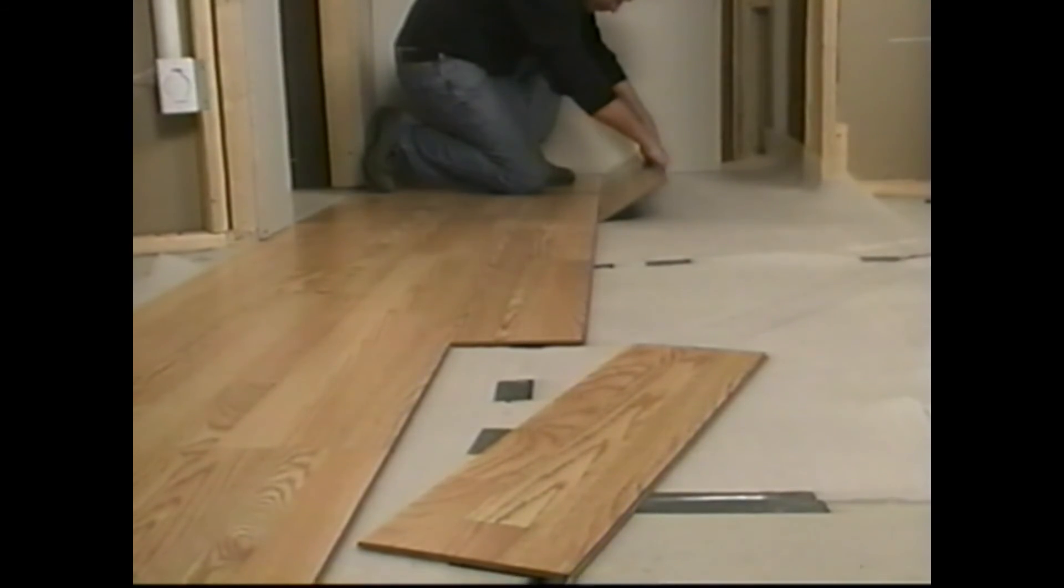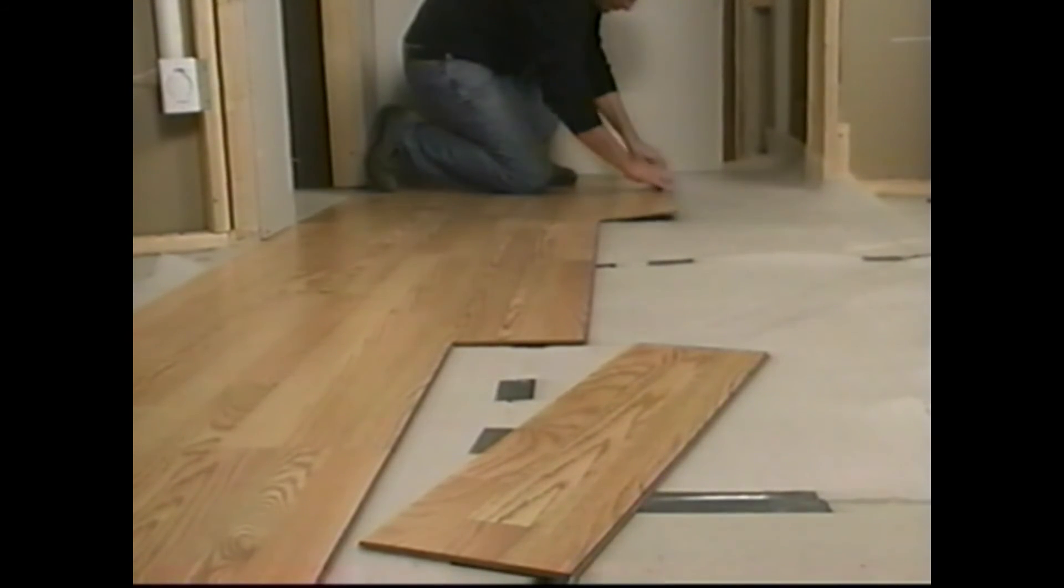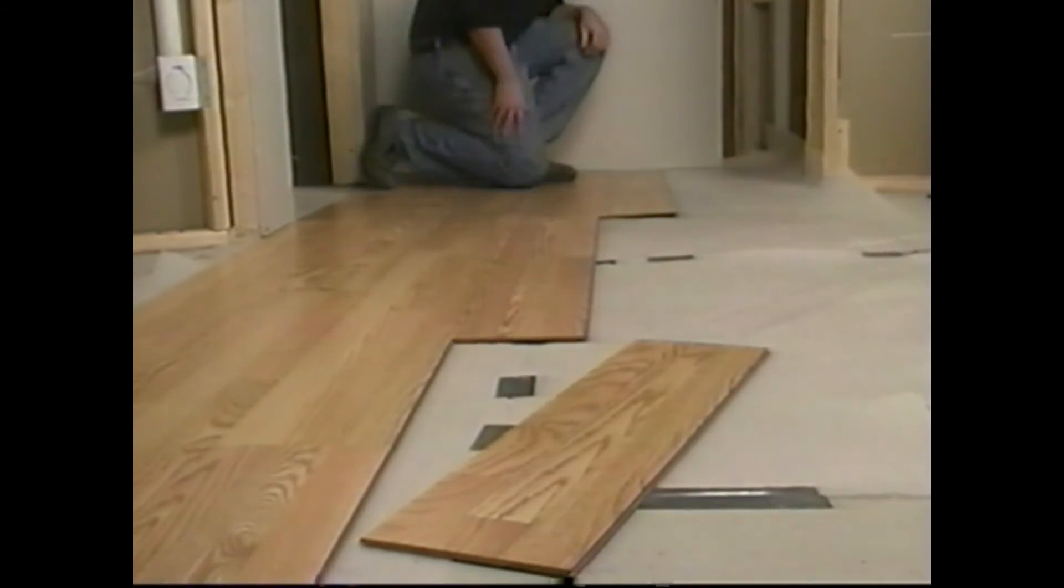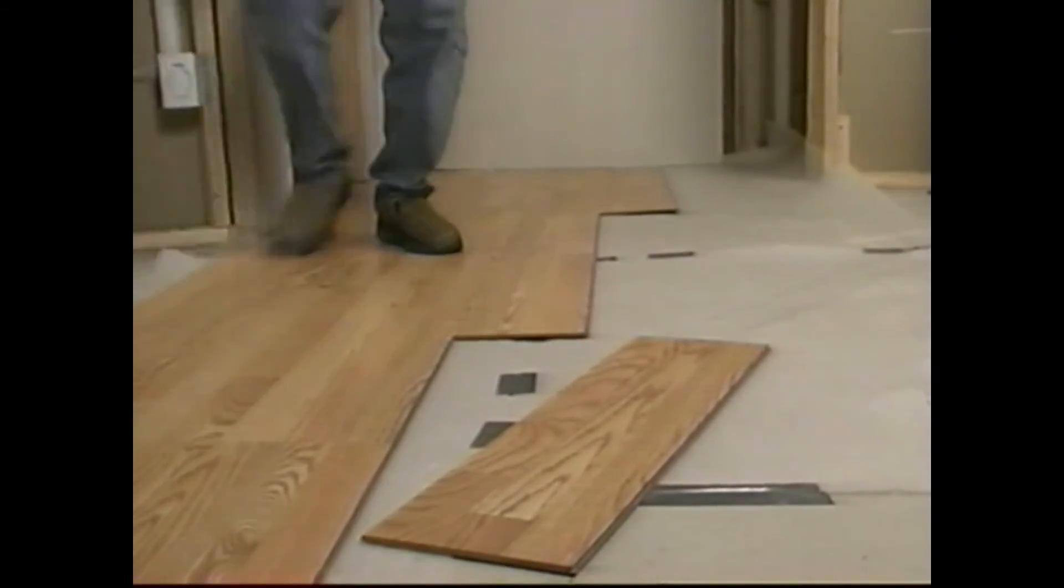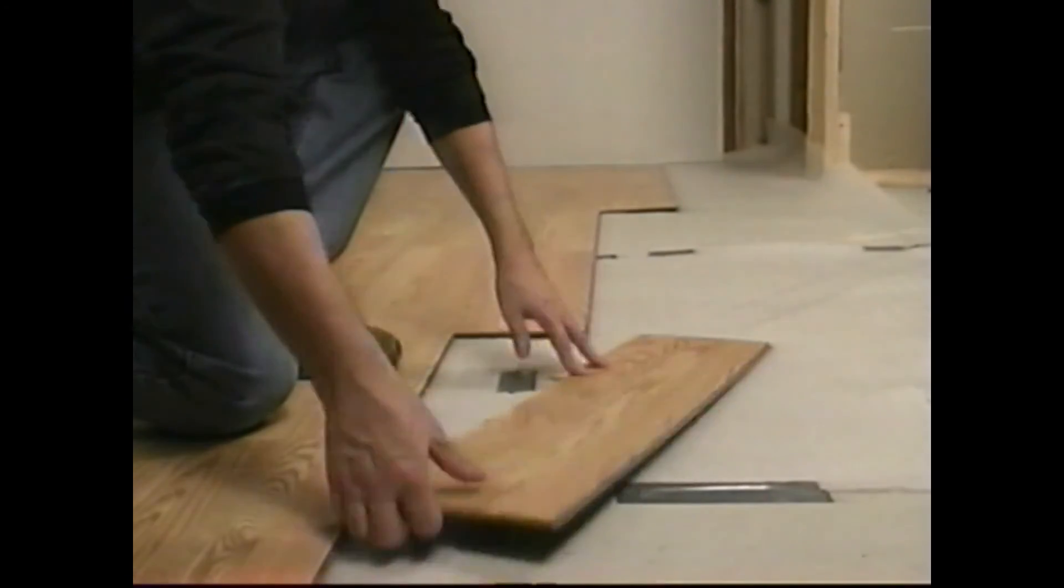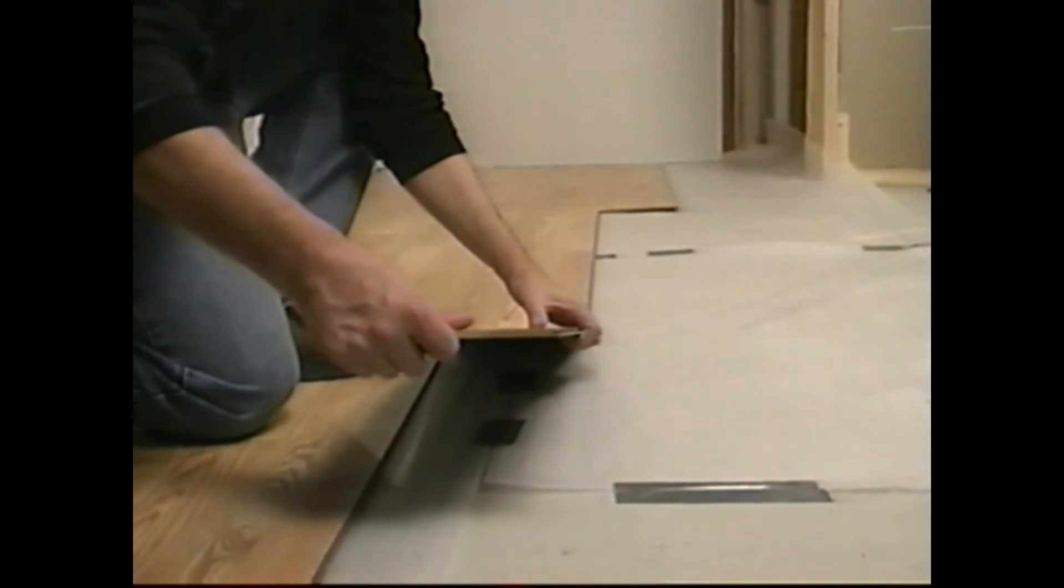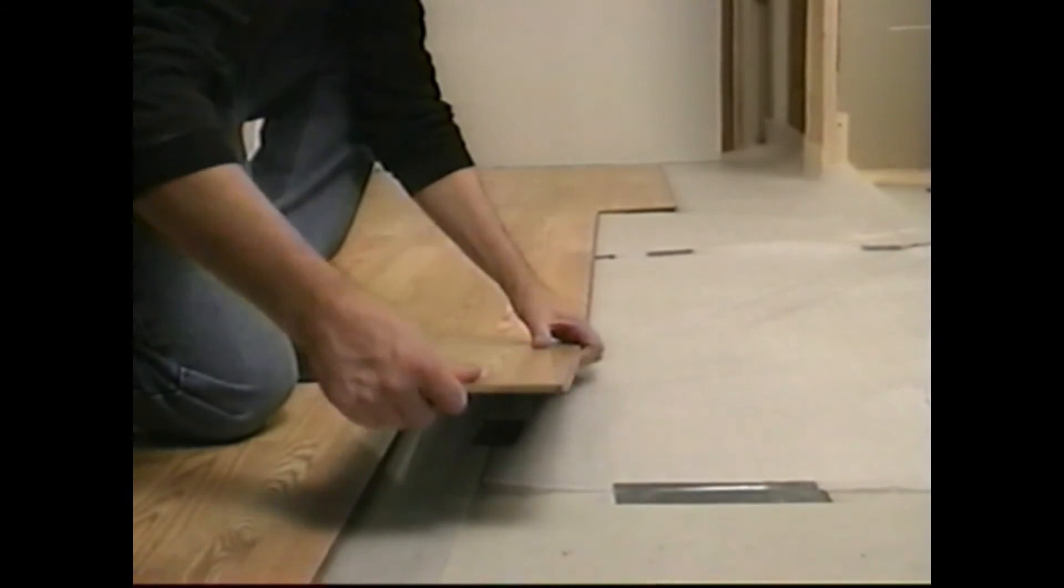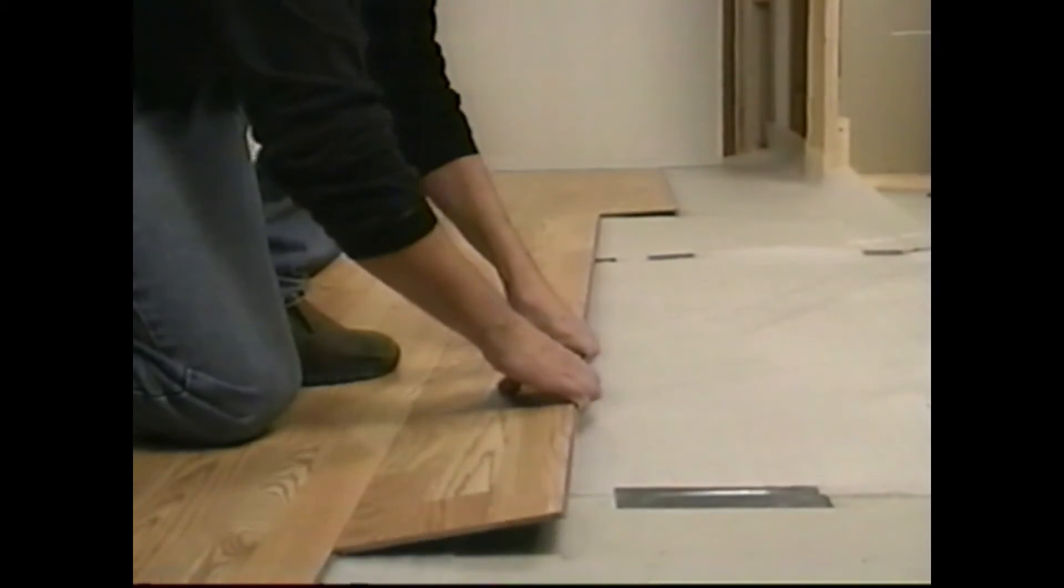Place a first plank at the beginning of a new row before you finish the current row. This creates a counterweight at the other end of the row you are assembling. This keeps the planks from lifting too high when you are handling them and prevents them from coming apart.